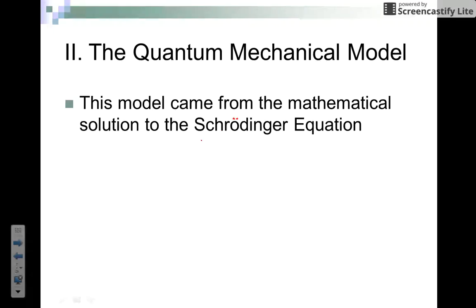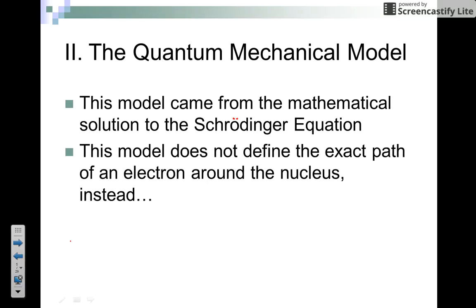The other models of the atoms have been physical models—for example, some students build models where protons and neutrons are in the nucleus and electrons orbit in the energy levels around the electron cloud. The quantum mechanical model is quite different in that it actually comes from a mathematical solution to the Schrodinger equation.